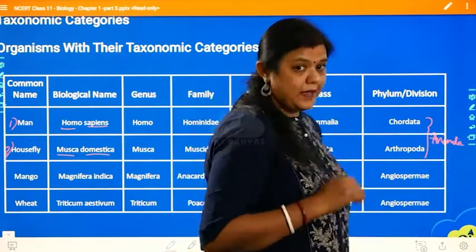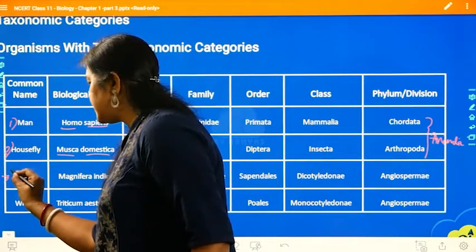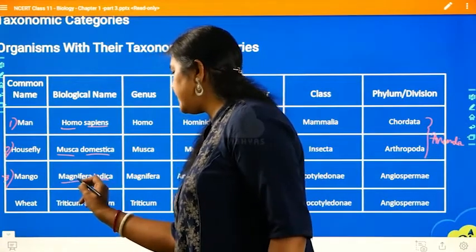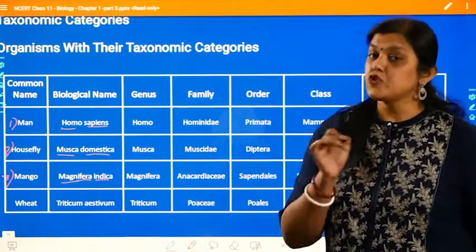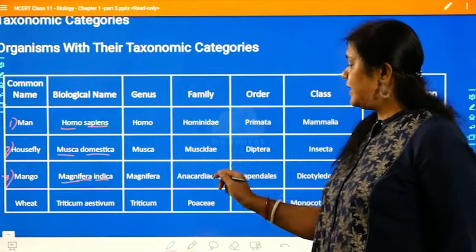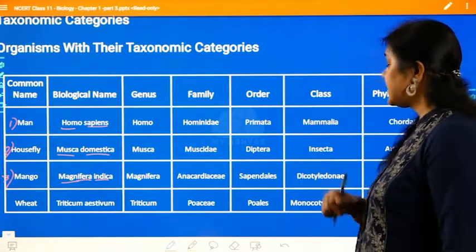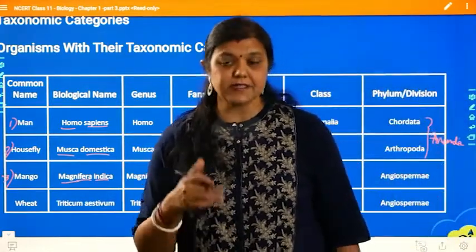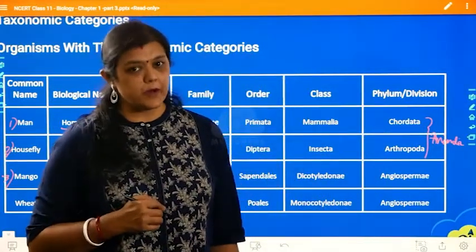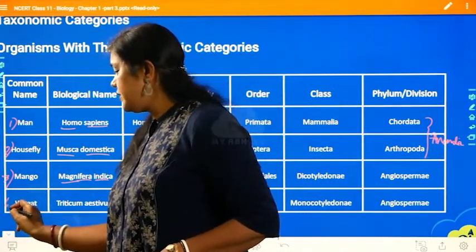The third example is mango. The scientific name of mango is Mangifera indica — indica being the species name and Mangifera the genus. The family is Anacardiaceae, the order is Sapindales, the class is Dicotyledonous, and the phylum or division is Angiosperm, meaning they are flowering plants.